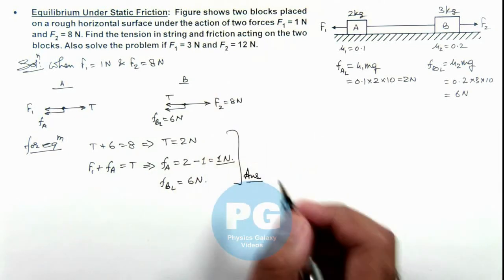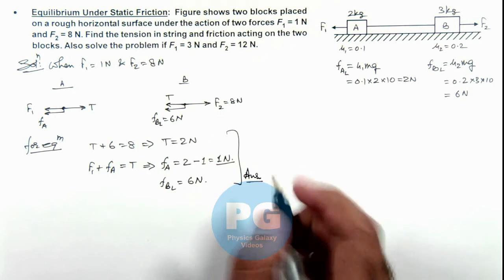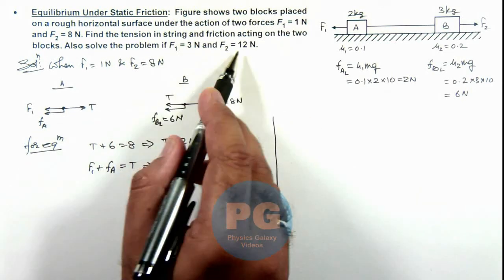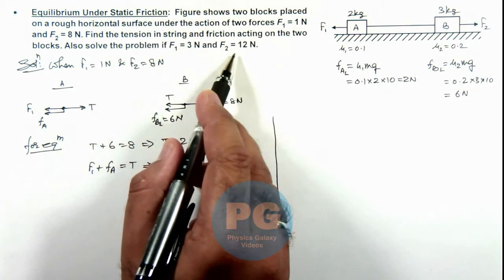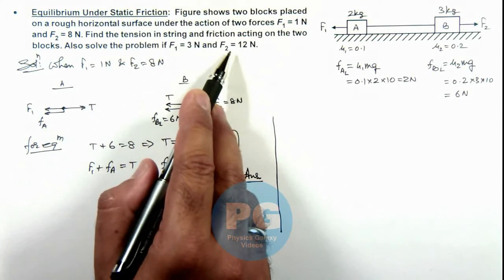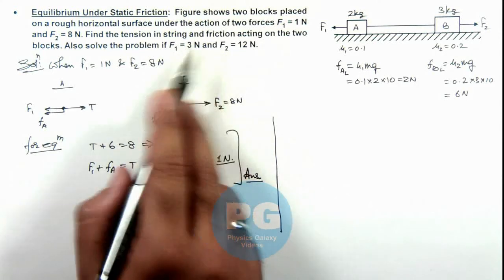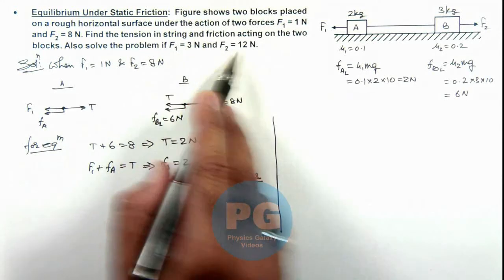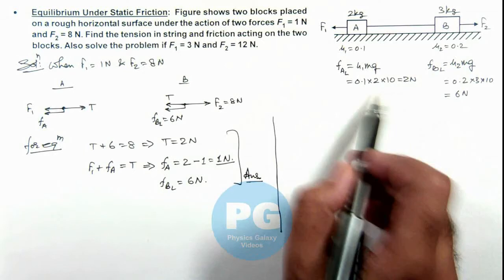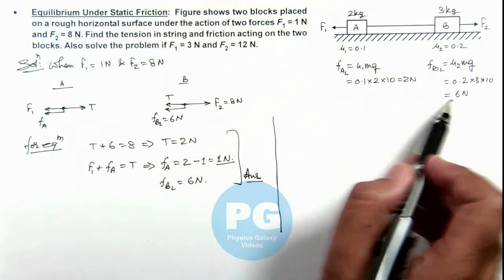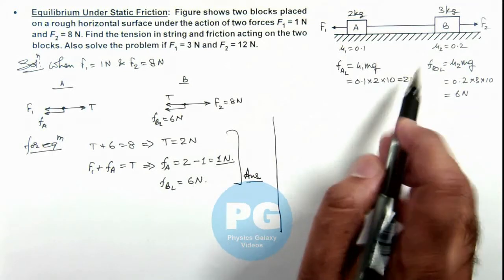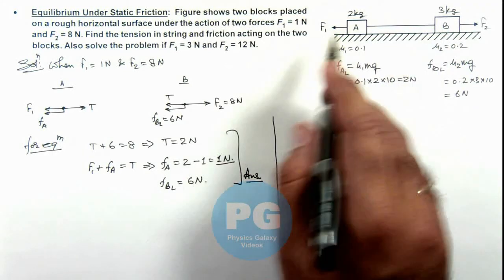If we analyze the second part of the problem where the values of F1 and F2 are changed, the difference of the 2 forces is 9 newton, which is greater than the total friction acting on the blocks of 8 newton. That means the whole system will start moving.